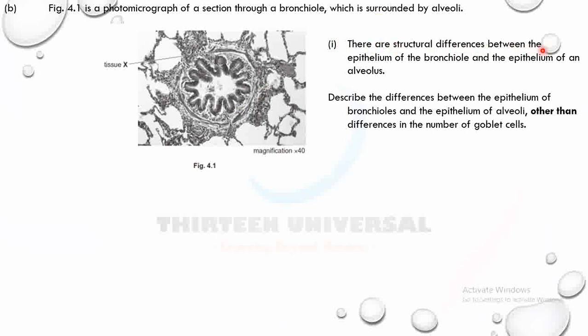Describe the structural differences between the epithelium of the bronchiole and the epithelium of an alveolus, other than differences in the number of goblet cells. Pause the video. The epithelium of the bronchiole consists of tall columnar cells. The alveolar epithelium is flattened — squamous — to shorten diffusion distance.